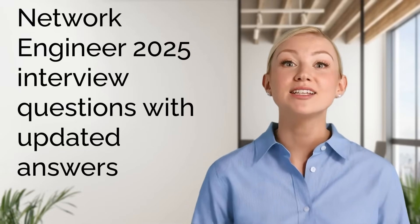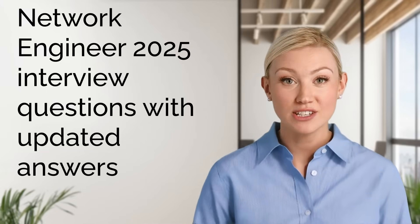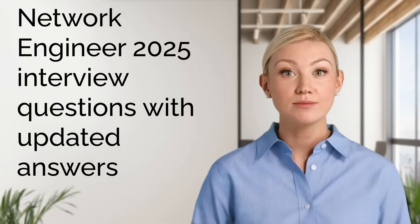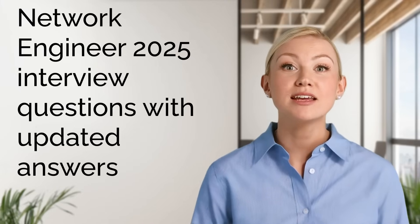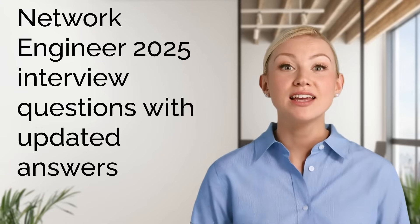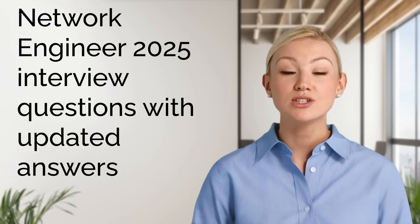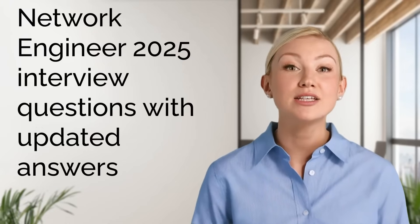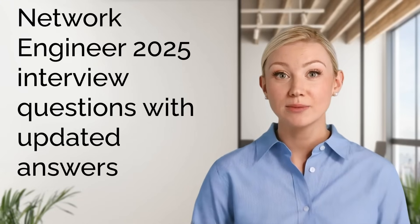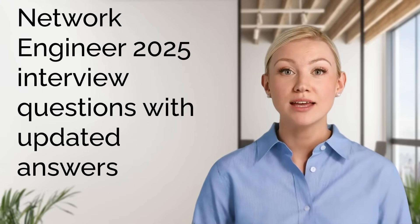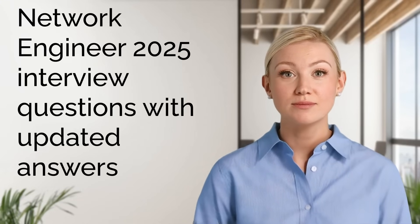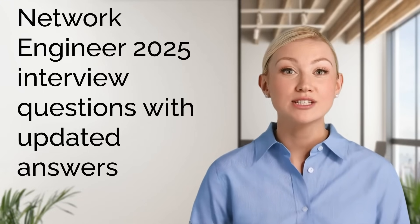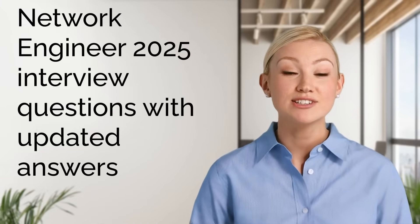Ten. How do you handle conflicting priorities in a high-pressure environment? Answer: I prioritize tasks based on impact and urgency, ensuring that critical issues like outages are resolved first. I communicate clearly with stakeholders to align on expectations and use project management tools to track progress. If needed, I delegate tasks or seek additional resources to ensure deadlines are met.